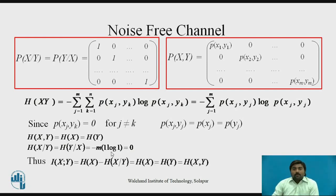Thus, for a noise-free channel, the mutual information I(x;y) equals H(x), which equals H(y), which equals the joint entropy H(x,y). This means the conditional entropy is 0 and the joint entropy equals both the source entropy and the destination entropy.